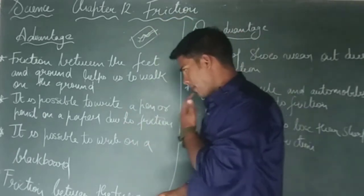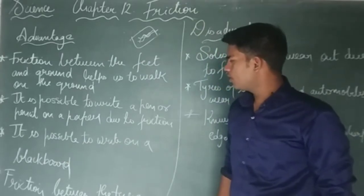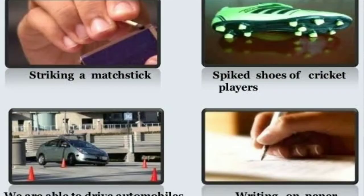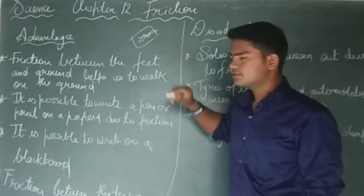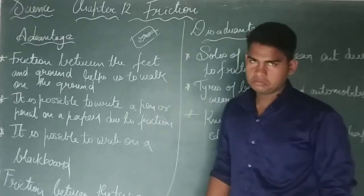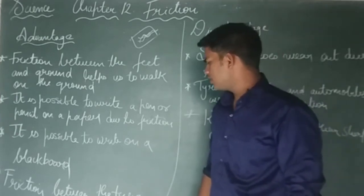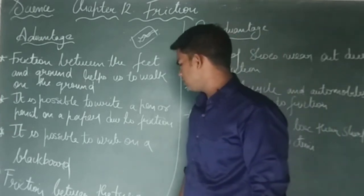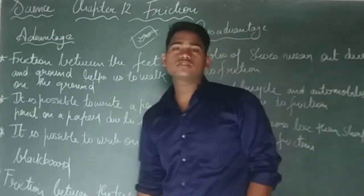It is possible to write on a blackboard because of friction. The friction between the tires and the road helps automobiles.